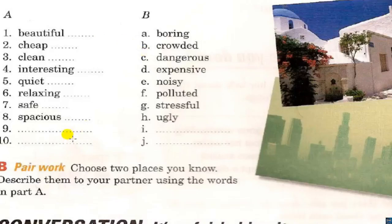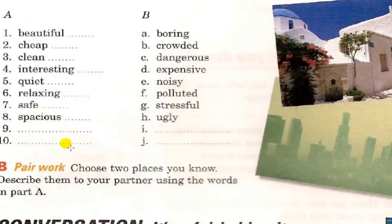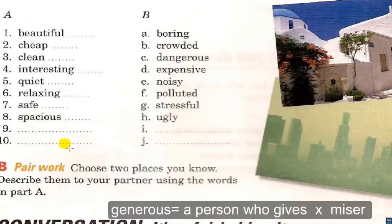You can have more adjectives. Small — Big. Tall — Short. Good — Bad. Generous — meaning a person who likes to give. Opposite: Miser — doesn't like to spend money.